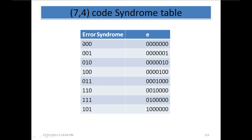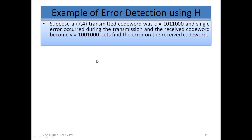These calculated values are written in tabular form. Now let's go through an example. Suppose a (7,4) transmitted codeword was C = 1011000, and a single error occurred during transmission so the received codeword becomes V = 1001000. As you can see, the third bit has been toggled — flipped from 1 to 0 — so the error occurred at that location.